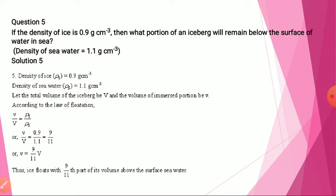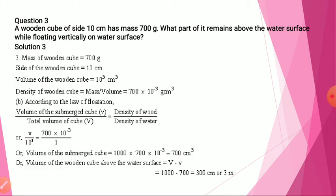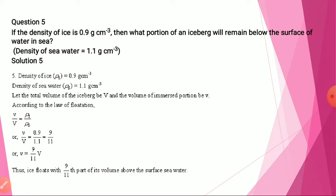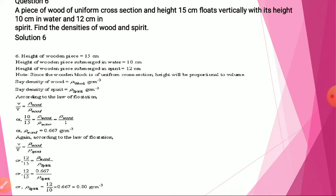Next: if the density of ice is 0.9 grams per centimeter cube, what portion of an iceberg will remain below the surface of water? Using the same formula — total volume of iceberg is V and the immersed portion is small v. Density of ice and density of sea water are given. From this we find that 9 by 11 parts of the volume will be below the sea water.